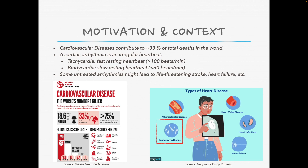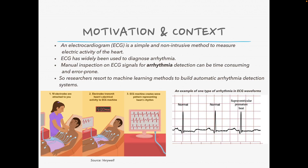Cardiovascular diseases contribute to one-third of the total deaths in the world. Among all the heart diseases, we focus on cardiac arrhythmia, which is an irregular heartbeat. Even though arrhythmia can be observed in normal people, some untreated arrhythmia might lead to life-threatening symptoms such as stroke and heart failure. An electrocardiogram is a simple and non-intrusive method to measure electric activity of the heart, and it has been widely adopted to diagnose arrhythmia. Manual inspection on ECG signals for arrhythmia detection can be time-consuming and error-prone, so researchers have resorted to machine learning methods to build automatic arrhythmia detection systems.